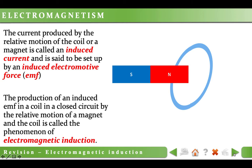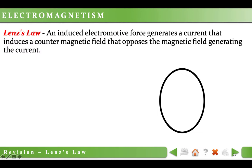The current produced by the relative motion of the coil or a magnet is called an induced current and is said to be set up by an induced electromotive force, EMF. The phenomenon where an induced electromotive force is produced in a closed circuit by the relative motion of a magnet and the coil is called electromagnetic induction. We use Lenz's law to find the direction of induced current in a loop. It states that an induced EMF generates a current that induces a counter magnetic field that opposes the magnetic field generating the current.